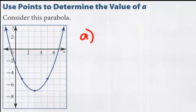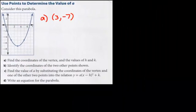Let's start with A. Find the coordinates of the vertex. All right, so the coordinates are 3 and negative 7. There they are, 3 across and down 7. Therefore, H is 3 and K is negative 7. So we found the values of H and K.